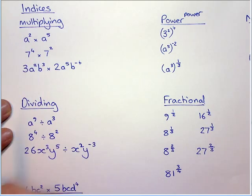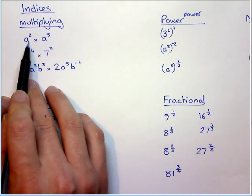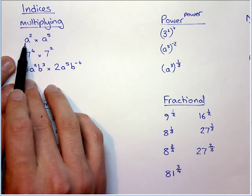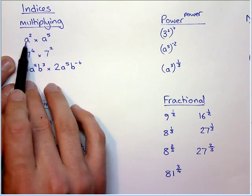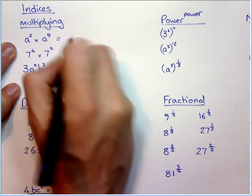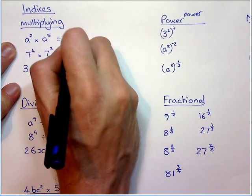Now, the first and the easiest one is multiplying indices. So if we have something like this, they might ask you to evaluate it, and when you have what we call the base value the same, it's very simple, you add the powers. So, this is a^7 when 2 add 5 is 7.